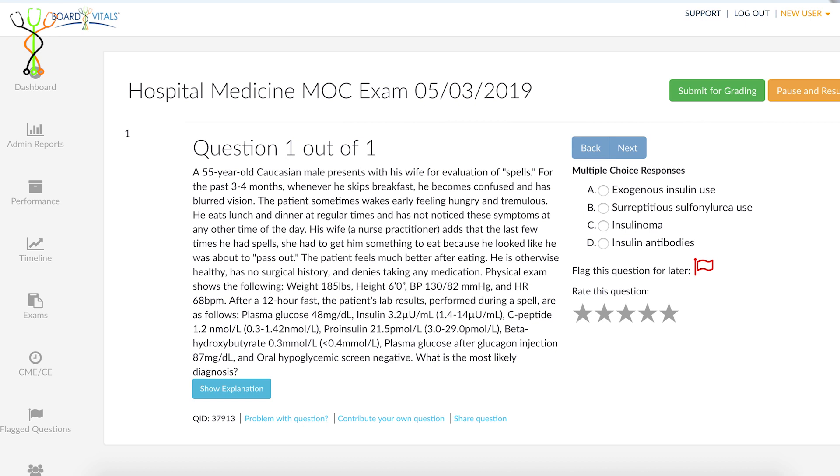After a 12-hour fast, the patient's lab results performed during one of his spells are as follows: plasma glucose 48, insulin level 3.2, C-peptide 1.2, pro-insulin 21.5, beta-hydroxybutyrate 0.3, plasma glucose after glucagon injection 87. An oral hypoglycemic screen is negative.